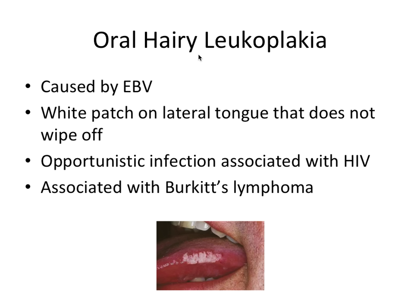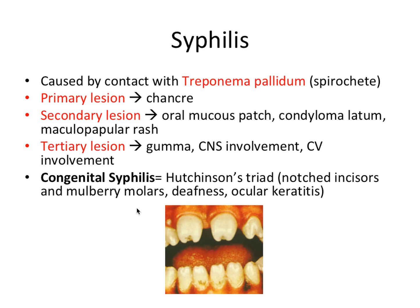Oral hairy leukoplakia — always think EBV, Epstein-Barr virus; always link those two together. It's a white patch on the lateral tongue that does not wipe off. It's an opportunistic infection usually associated with HIV and the immunosuppression that results from that. It's also associated with Burkitt's lymphoma.